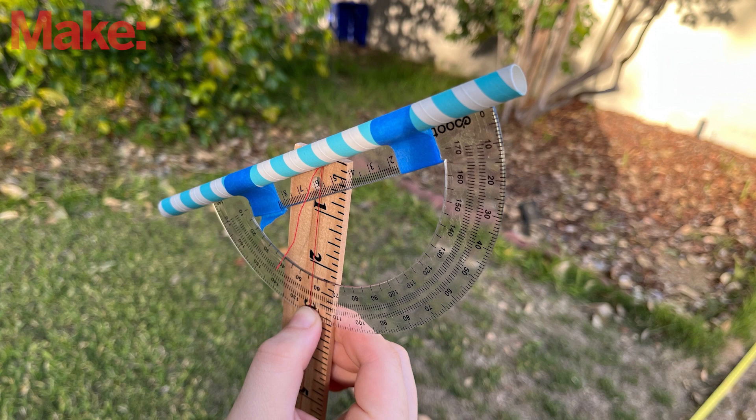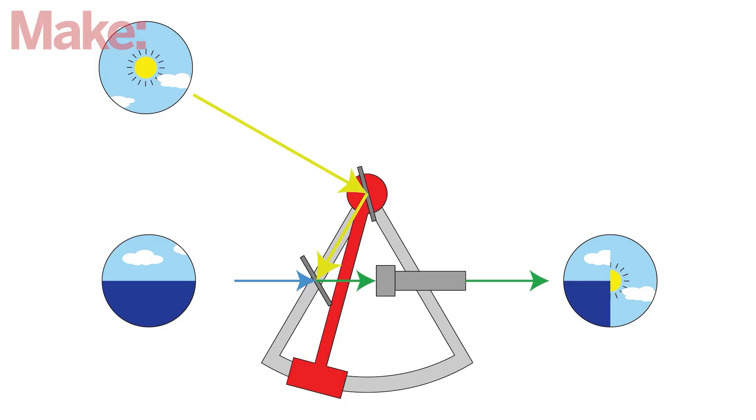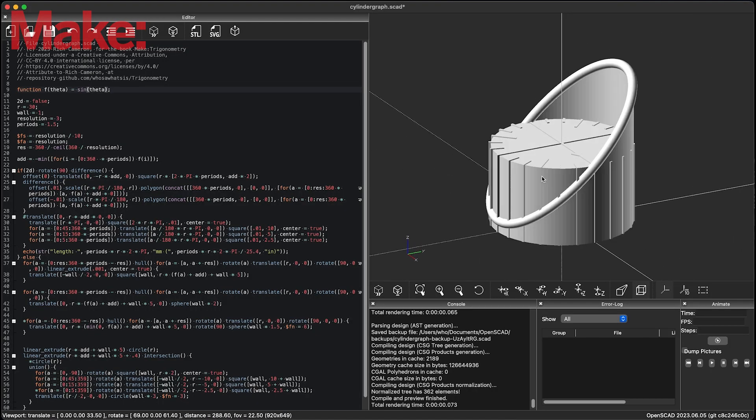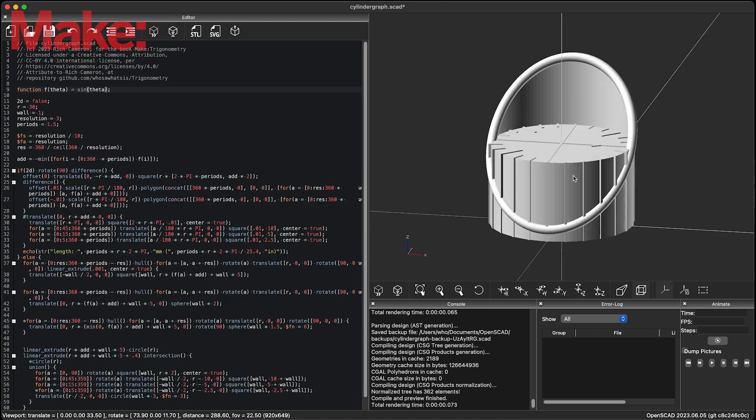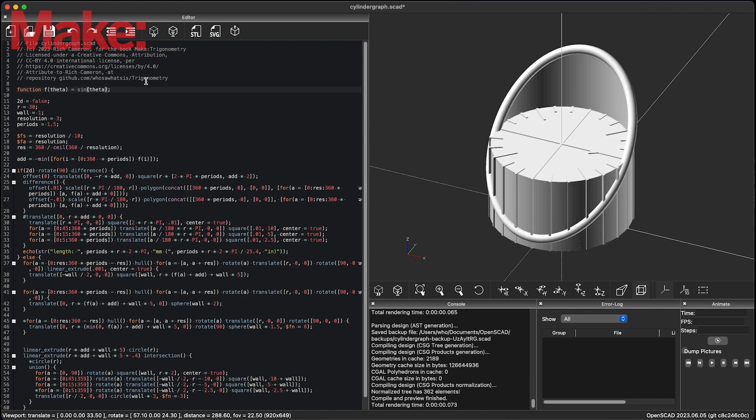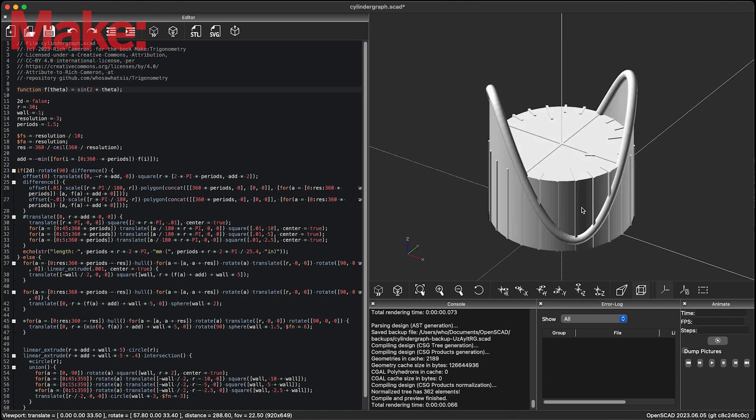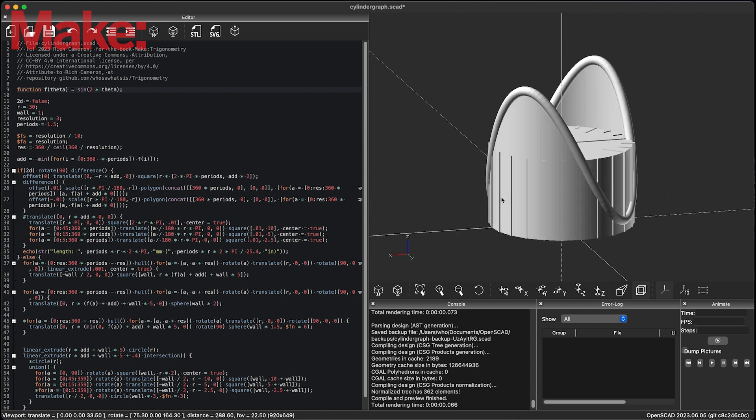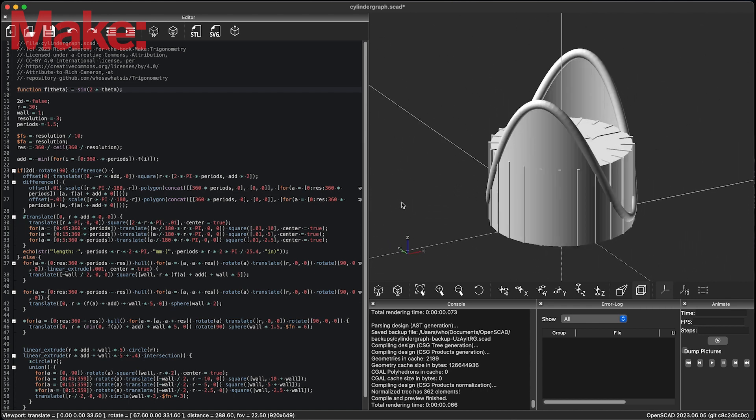But in our latest book, Make Trigonometry, we show you how to take it to the next level with maker tools like a 3D printer. All of our 3D printable models are open source, and you can share them freely from our repository. They're written in a code-based CAD program called OpenSCAD, so you can change them and learn some coding too along the way.